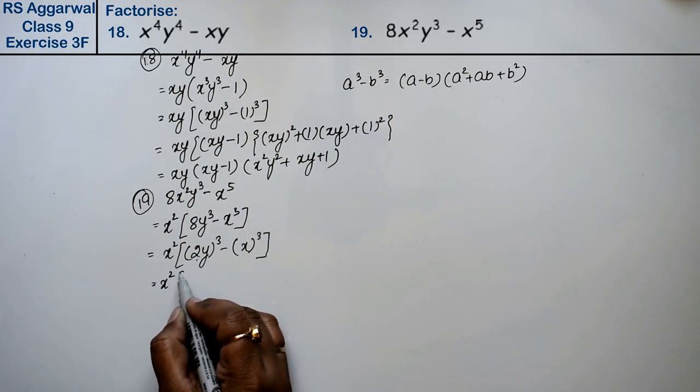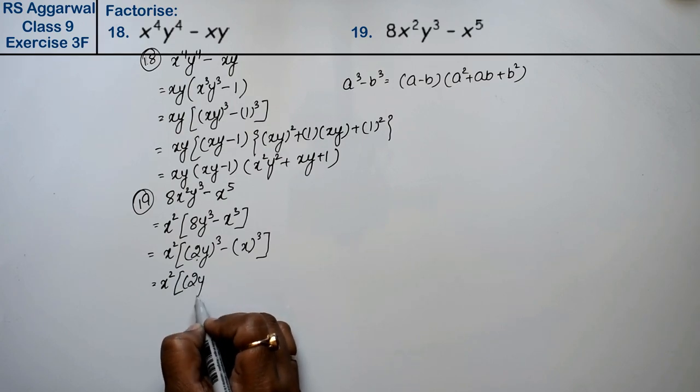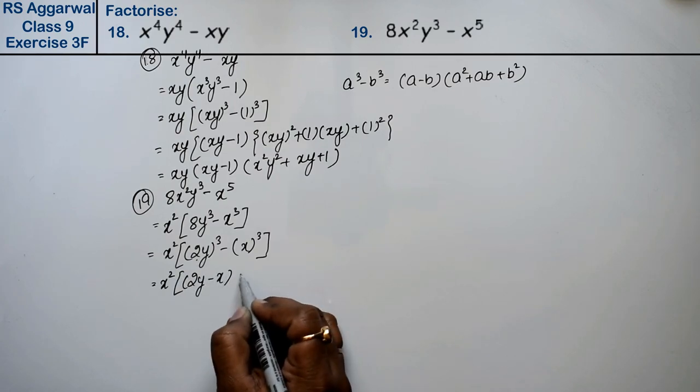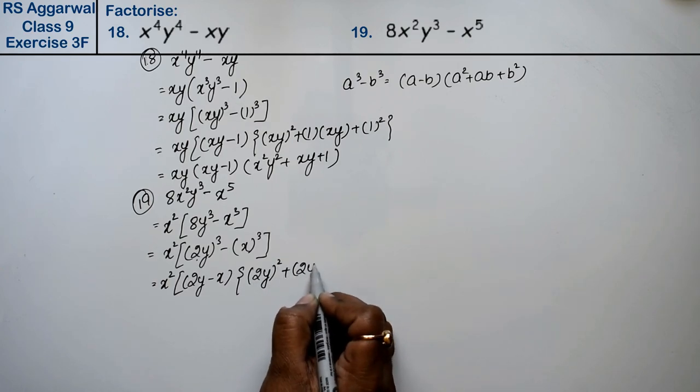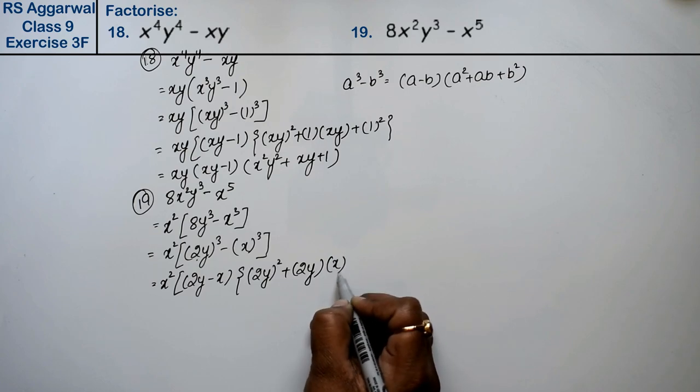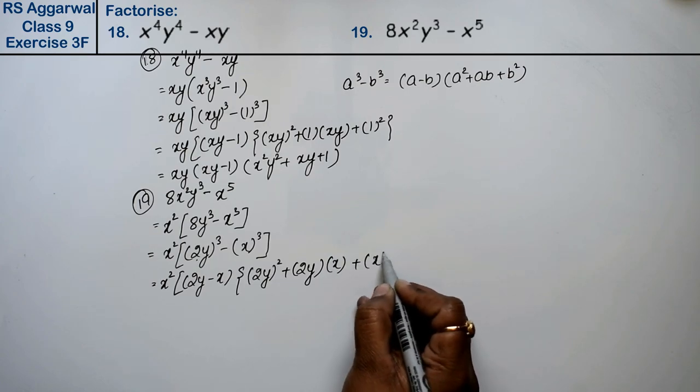So it's x square times a minus b, a square plus ab plus b square.